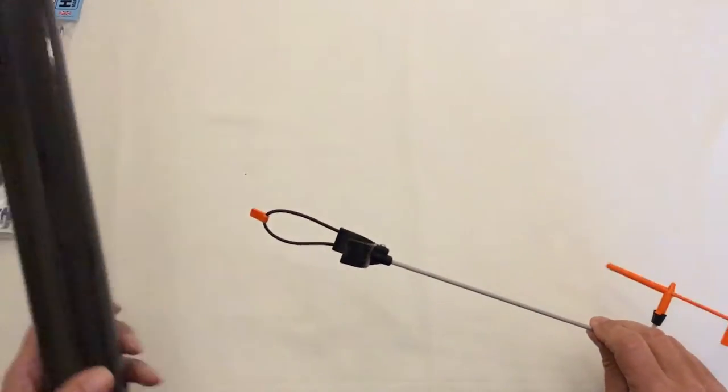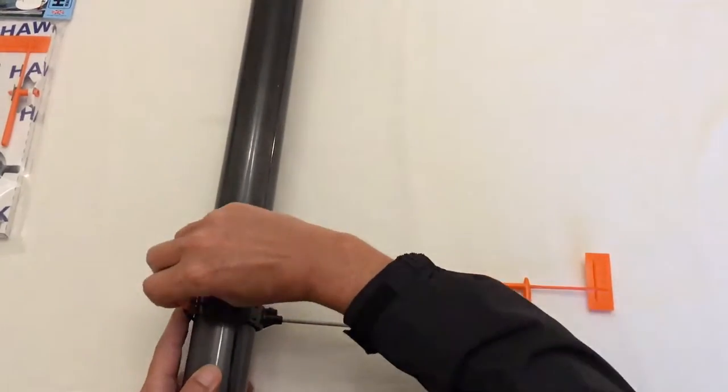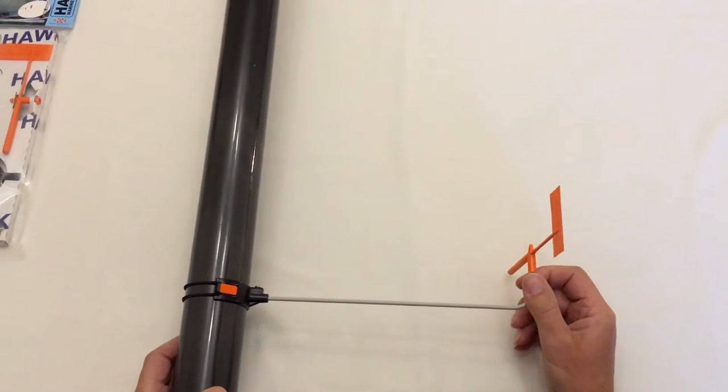So I have a piece of carbon tube here. Now you notice it fits around the mast nice and tightly. The elastic does up. And there she is all ready for use.